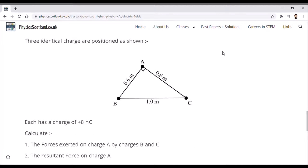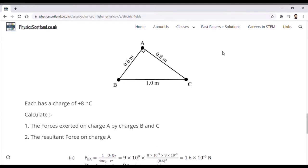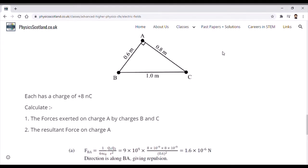To start us off in this question, the first thing we need to do is take each of charges B and C in isolation in regards to charge A, and then we'll do a vector calculation at the end to get that overall resultant value. We're going to use the equation F equals 1 over 4π epsilon naught times q1 q2 over r squared, and we're going to start with A and B interacting.